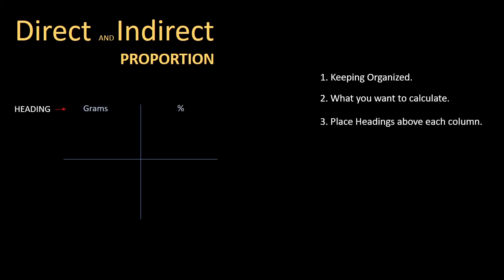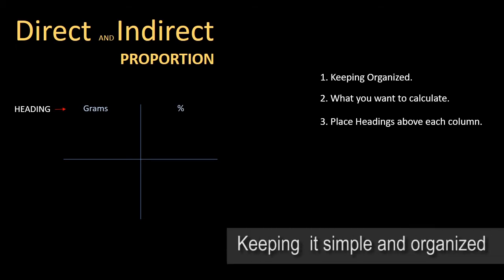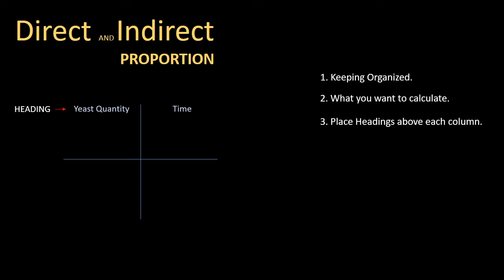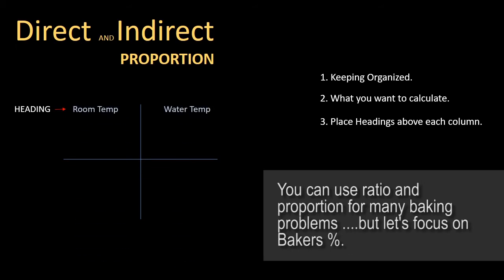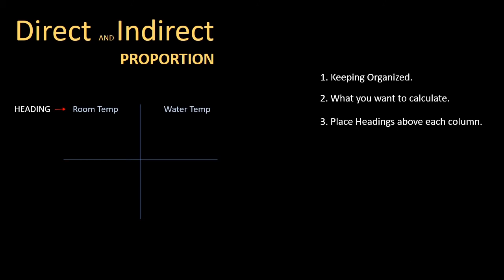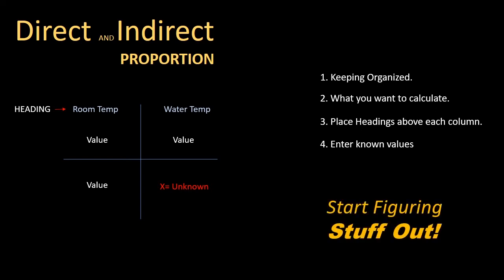Place a heading above there just to keep it all organized. In this instance we want grams and we're going to figure out percentages. You can also use direct and indirect proportion for things like yeast quantity and the time it takes, or a water temperature adjustment based on your room temperature. Direct and indirect proportion will help you work out a lot of different things mathematically to help you in baking. Enter in the values, get your x — the unknown — and then you can start figuring stuff out.